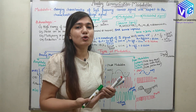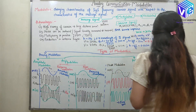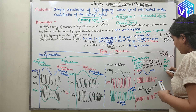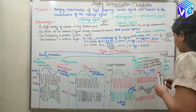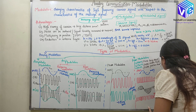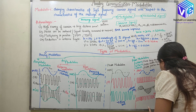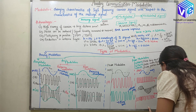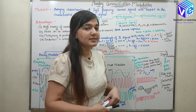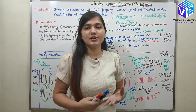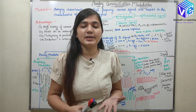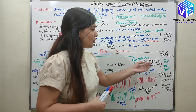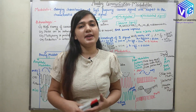Now in digital modulation, we have two types: high frequency and low frequency. For low frequency modulation I have pulse code modulation, delta modulation, and adaptive delta modulation. For high frequency digital modulation, we have already discussed ASK, FSK, PSK, QPSK, DPSK, and MSK. These low frequency modulations — PCM, DM, ADM — we will discuss in analog communication only.